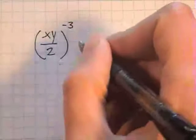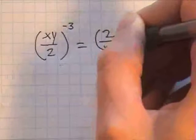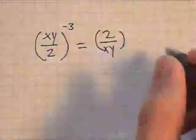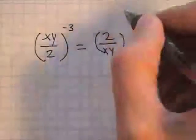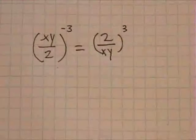All that looks like is 2 goes on top, x, y on bottom, and then you write the 3, but as a positive number for the exponent.